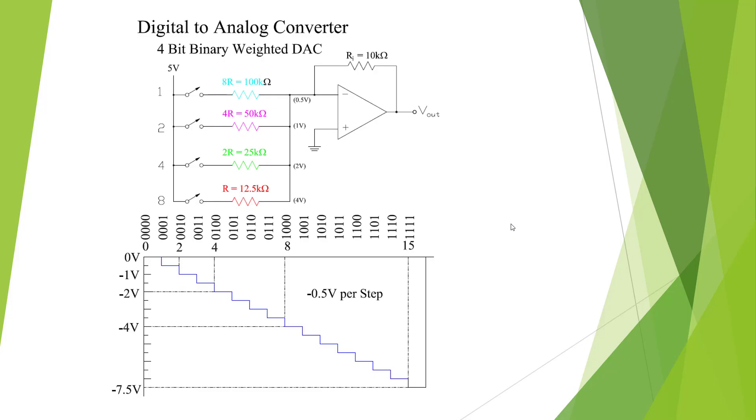Here we show another DAC, this one a 4-bit binary weighted DAC into an op amp. And here we're showing this stair step of 0 to 7.5 based on the division of these resistors.